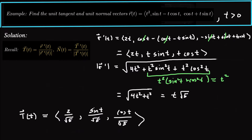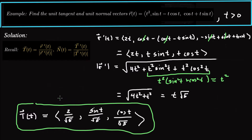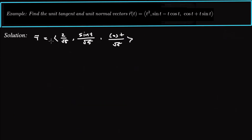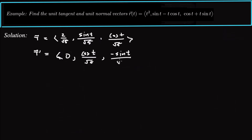Now we need the unit normal vector, which means we take the derivative of capital T. Capital T prime: the first term 2 over √5 is constant, so its derivative is 0. Derivative of sine is cosine, so the second component is cosine t over √5. Derivative of cosine is negative sine, so the third component is negative sine t over √5.